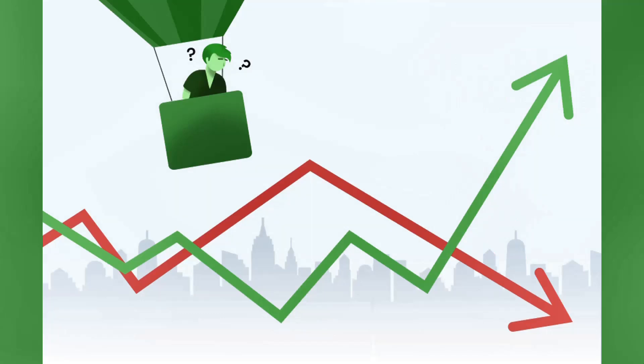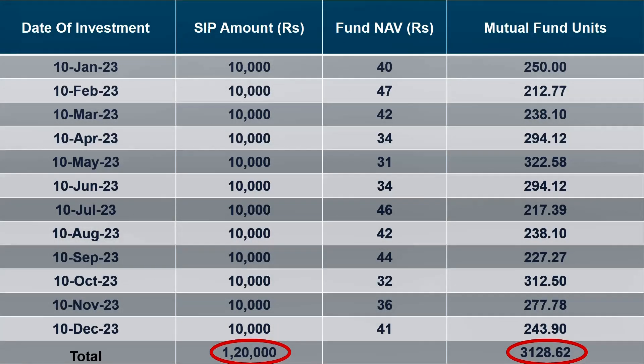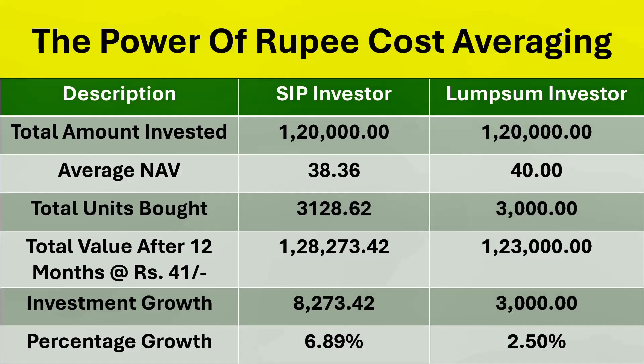The RCA approach lets you sail over the volatility in market prices to gain profits in the long term. Let's now consider the following example to understand the benefits of RCA while investing through SIP vis-à-vis a lump sum investment. Richa invests Rs 10,000 every month in an equity mutual fund through an SIP plan. She started investing in January 2023 and the SIP was for a period of 12 months. Considering the market has been quite volatile, her investments are reflecting in the table on your screens. By December 2023, Richa has invested Rs 1,20,000 and purchased 3,128.62 units. The average NAV using RCA for each unit comes as low as 38.36, that is 1,20,000 divided by 3,128.62 units.